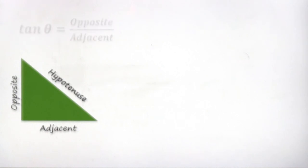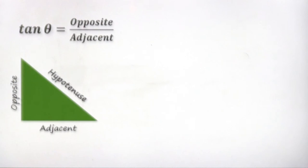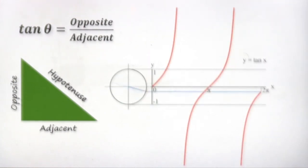Another important trigonometric function is tangent θ, which equals opposite over adjacent. The graph for tangent θ can be represented as shown.